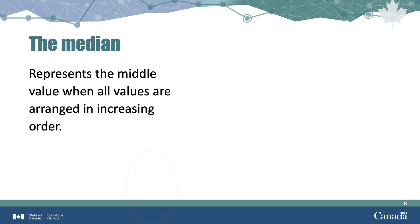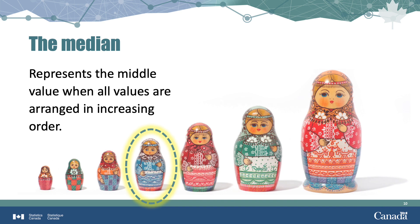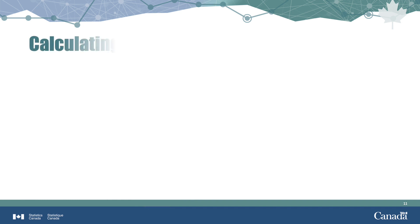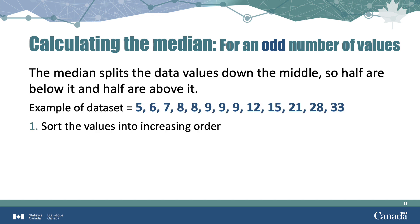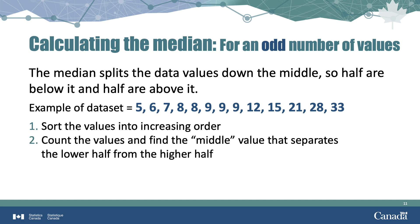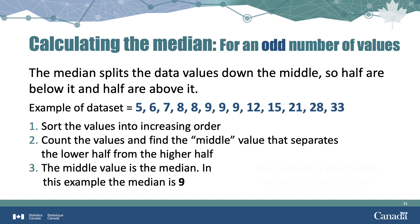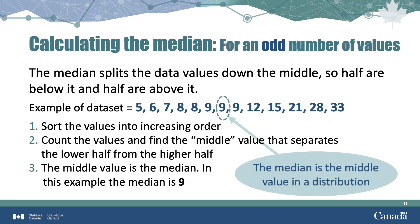Another measure of central tendency is the median, which is defined as the middle value when all values are arranged in increasing order. Calculating the median when the dataset has an odd number of values is straightforward. First, we sort the values into increasing order. Then, we count the values and find the one in the middle, where half the values are above it and half below. That middle value is the median. In this example, the median is 9.